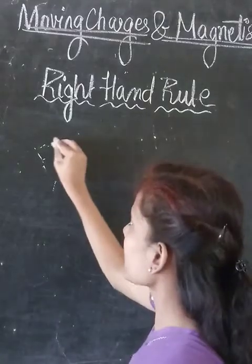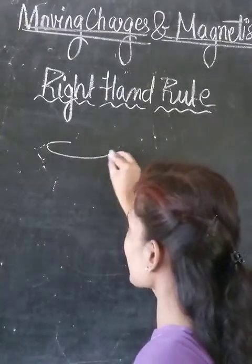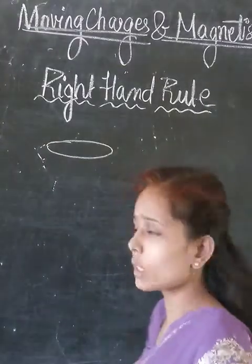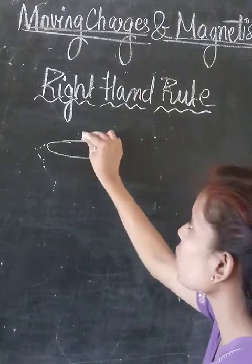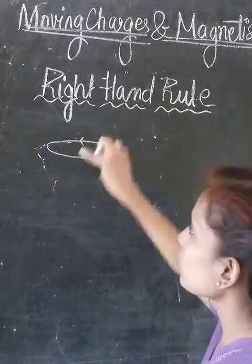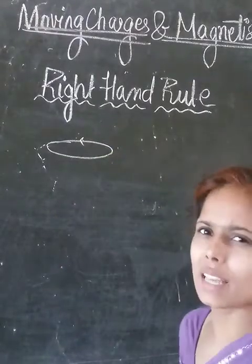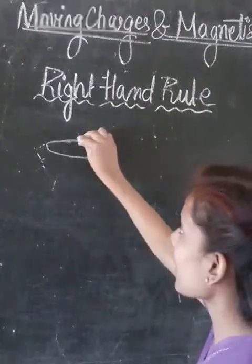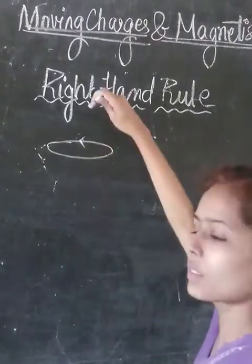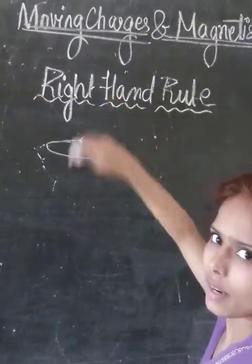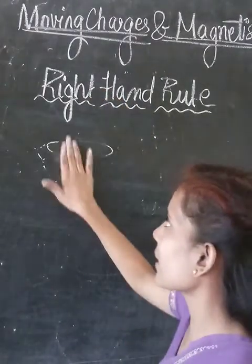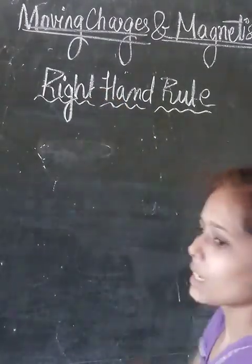We have seen that the magnetic field lines are closed curved loops, and the arrow shows their direction. Now we will see what the right-hand rule means and how we can use it to show the direction of these magnetic field lines.